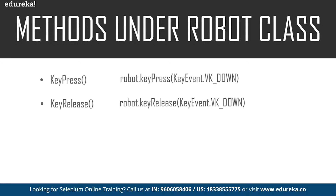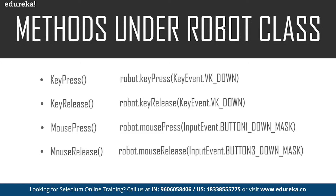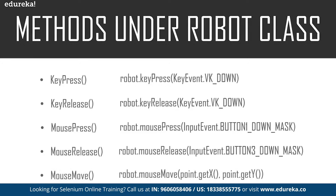Now let's take a look at the methods used to handle mouse functions. We have the mouse press method, which is used to press the left button of the mouse. Then we have the mouse release method, which is used to release the pressed button of the mouse. Last, we have the mouse move method, which moves the mouse pointer to the X and Y coordinates. The coordinates of the element are passed in this mouse move method — the command goes something like robot.mouseMove() and you specify the X axis and Y axis coordinates.